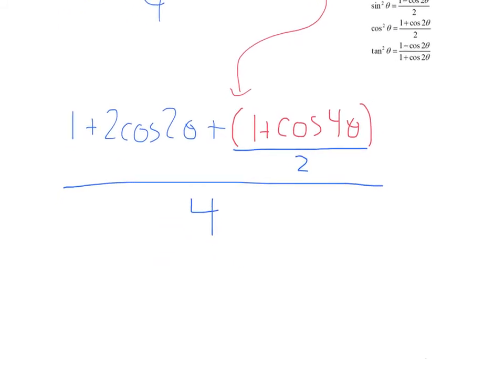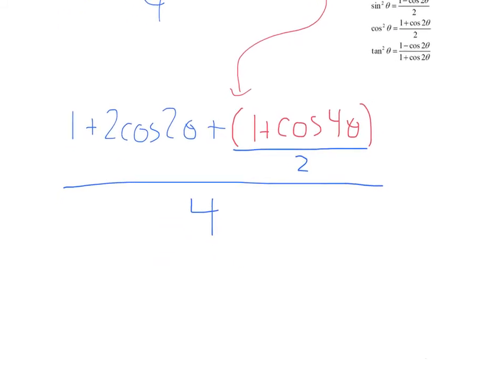Now, it looks like we have everything in powers of 1, but we definitely need to simplify. So, I've got this weird fraction here. What we can do is clear that out. Let's times the top by 2 and the bottom by 2.